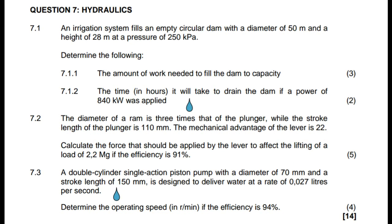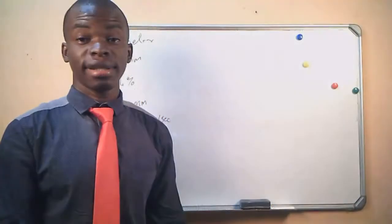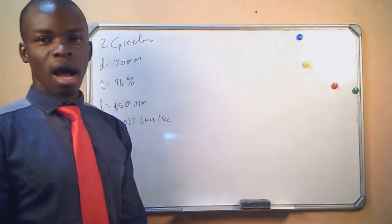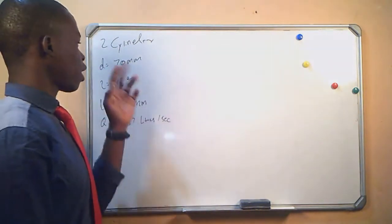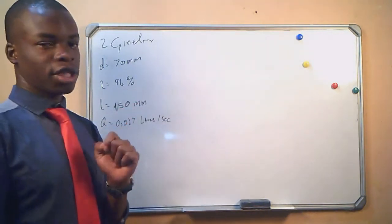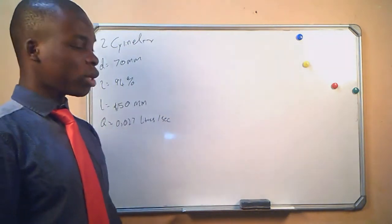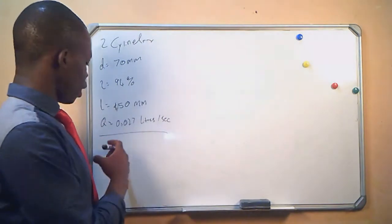We go to the second question: a double cylinder, single-acting piston pump with a diameter of 70 millimeters and a stroke length of 150 millimeters is designed to deliver water at a rate of 0.027 liters per second. The question asks us to determine the operating speed in revolutions per minute if the efficiency is 94 percent.